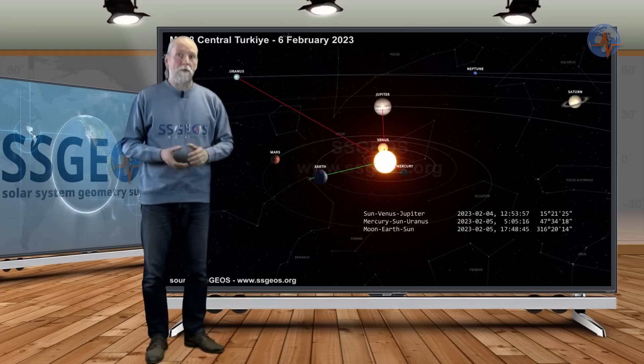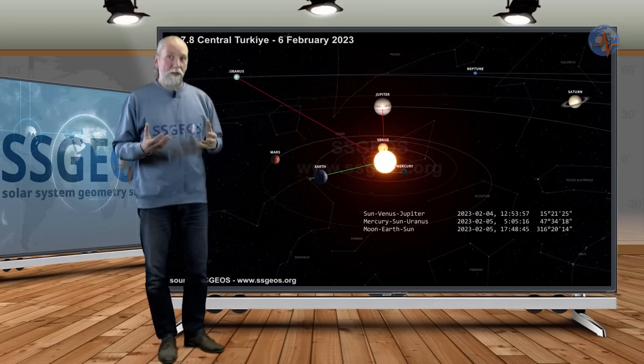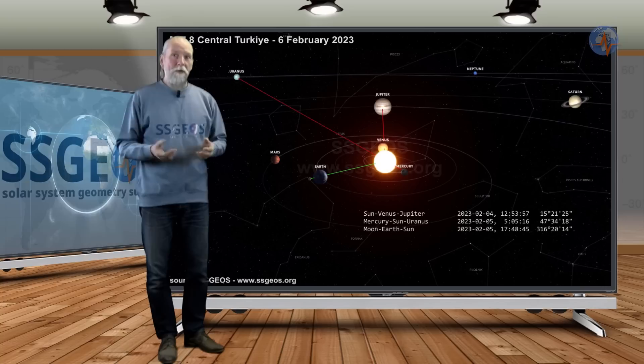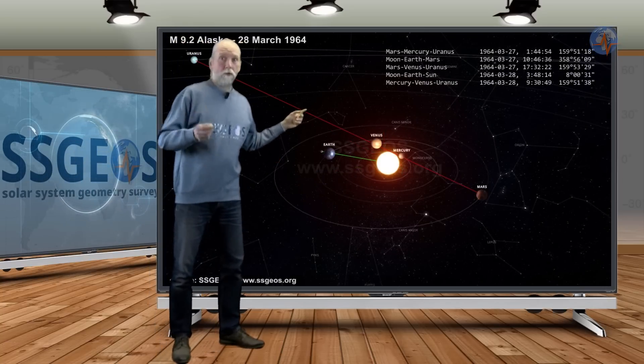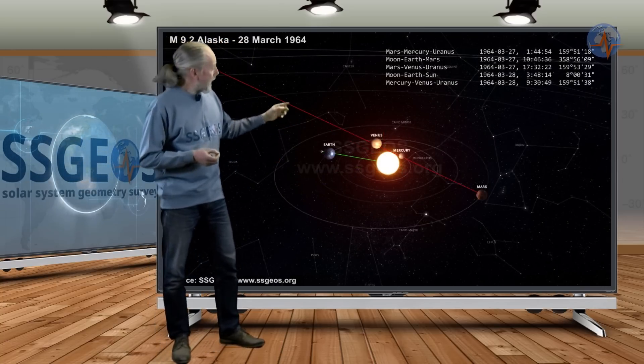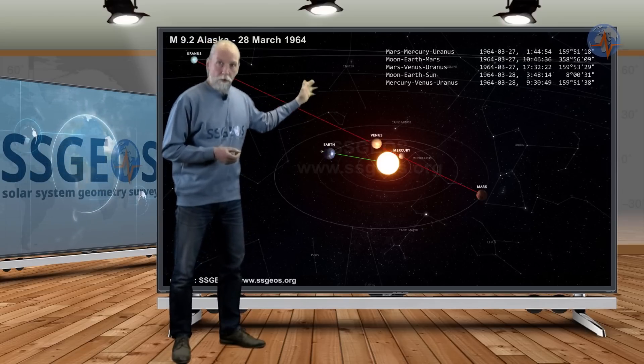We have many more examples, also in the reports on the website. I'll show you just a couple more to make it clear what is actually happening at full moon and large earthquakes. In 1964, a magnitude 9 earthquake occurred in Alaska. It happened not just at the full moon, but also at the time that Mars, Mercury, Venus, and Uranus were in a quadruple conjunction—very specific geometry.